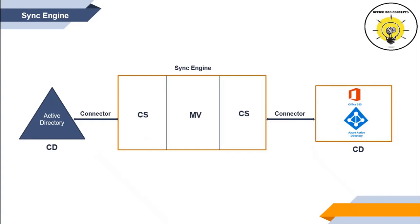The next component of Sync Engine is connector space. Connector space stores a replica of all the objects present within connected data sources. For example, if we have two users in Active Directory, connector space will store those objects and their attributes. If we make any changes to those users within Active Directory, the changes will be updated within connector space as well. If we add another user in Active Directory, during the Sync Cycle, connector space will copy and store the new object and its attributes. With the help of connector space, Sync Engine evaluates whether the data has already been synchronized or not.